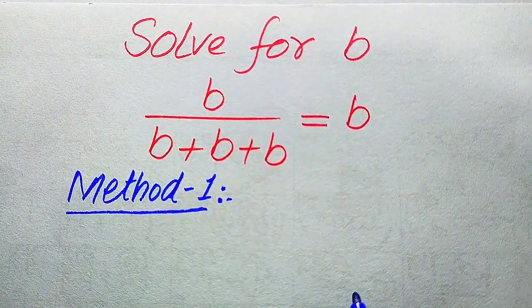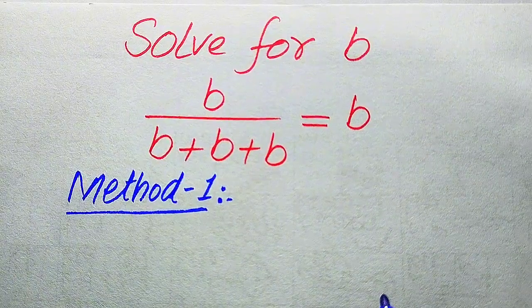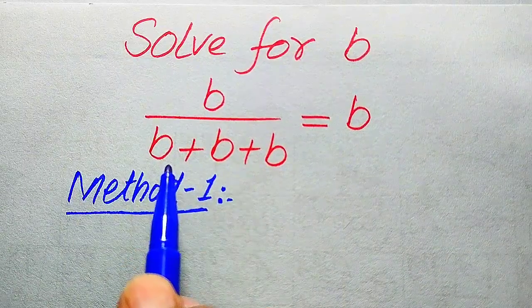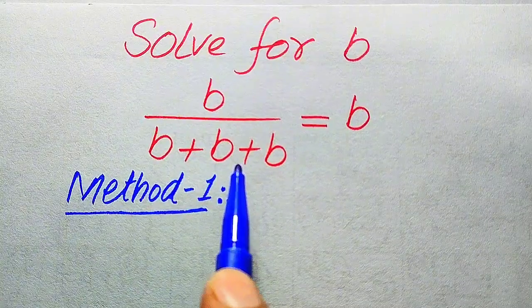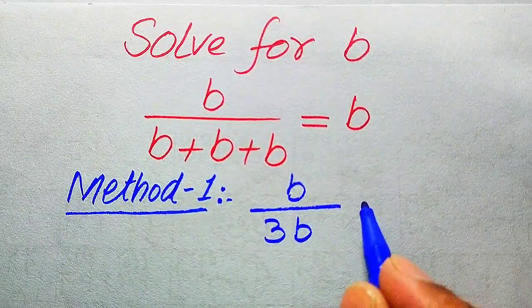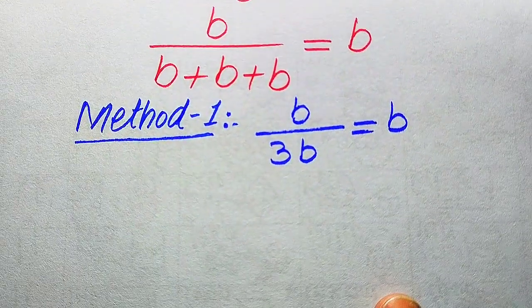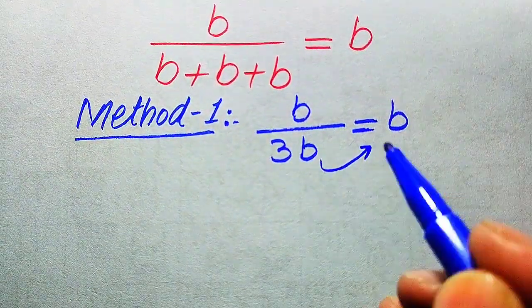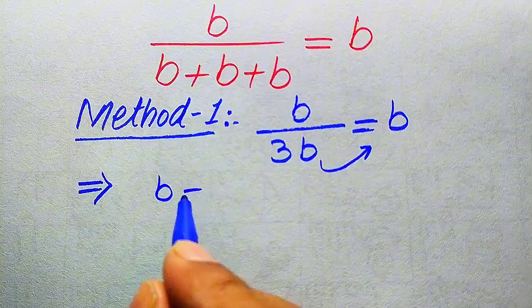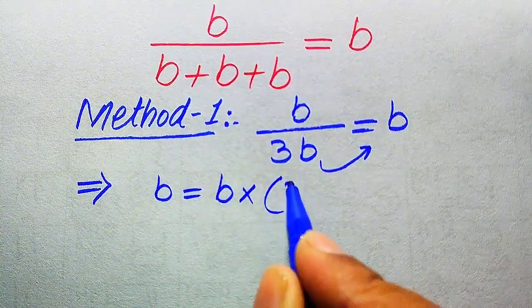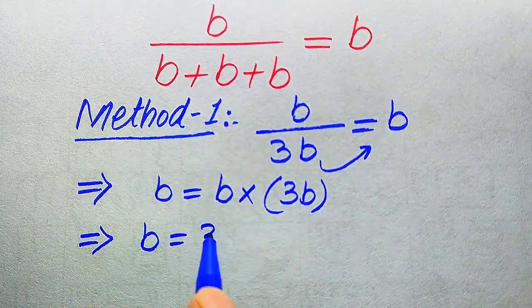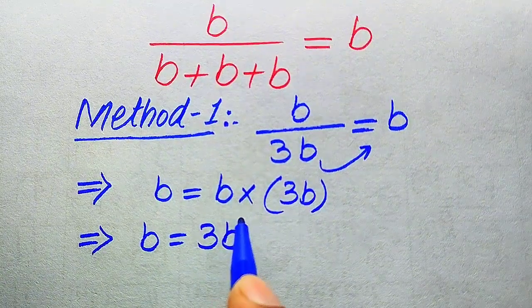If you have any other method in mind, please write it in the comment section. Now we move towards the solution from the first method. Focus on the denominator of this term — these are three same variable terms added together, so it becomes b divided by 3b equals b. In the next step we move 3b from the left hand side, and it becomes b equals b multiplied by 3b, which equals 3b squared.